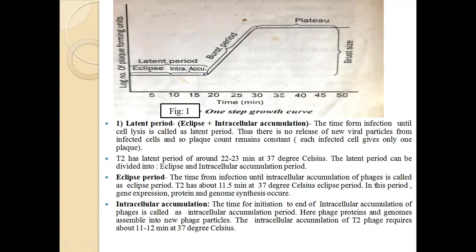The second sub-period of the latent period is the intracellular accumulation period. The time from initiation to the end of intracellular accumulation of phage is called the intracellular accumulation period. Here, phage proteins and genome assemble into new phage particles. The intracellular accumulation period of T2 phage requires about 10 to 12 minutes at 37 degrees Celsius.